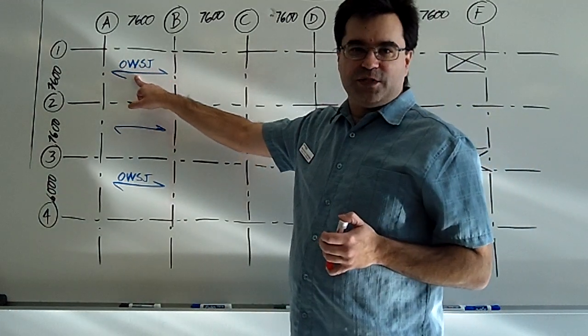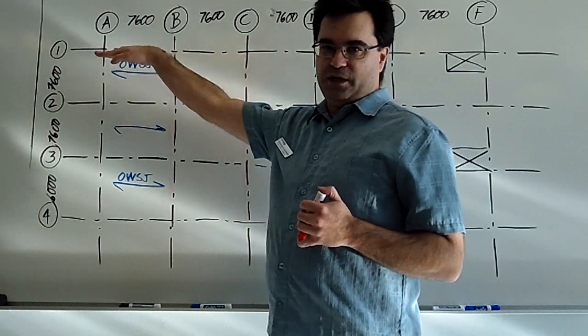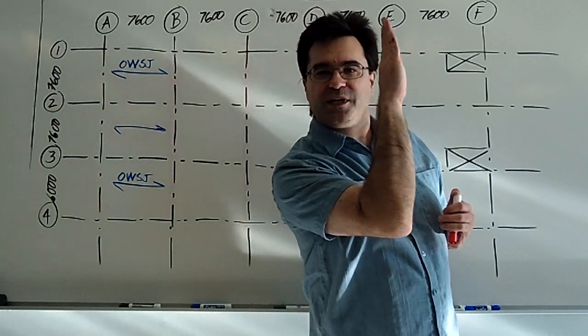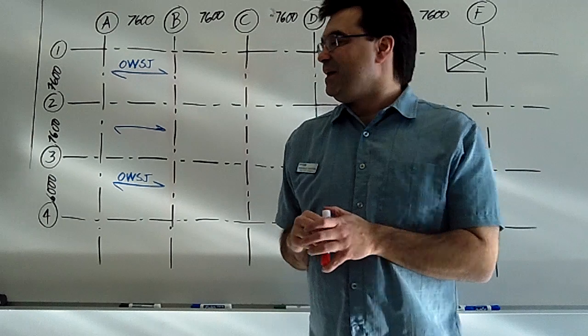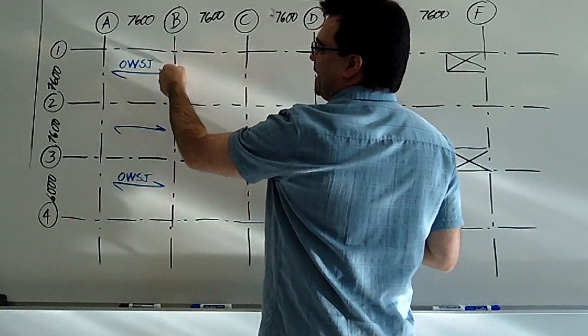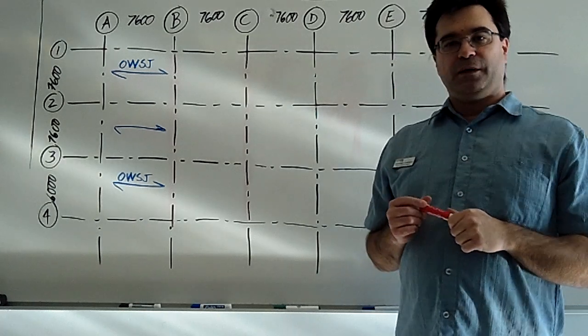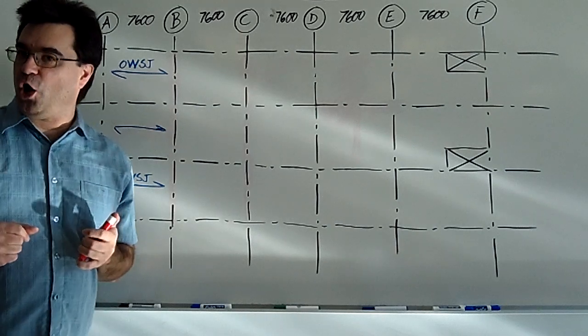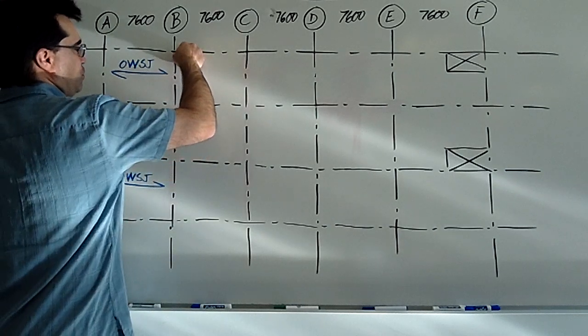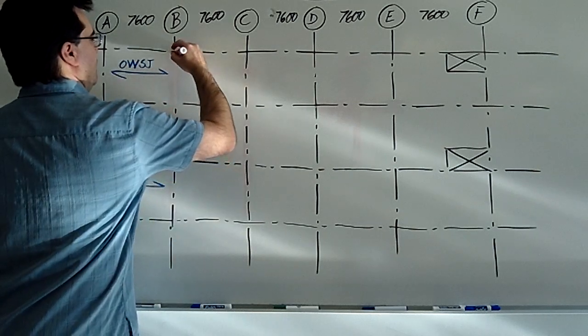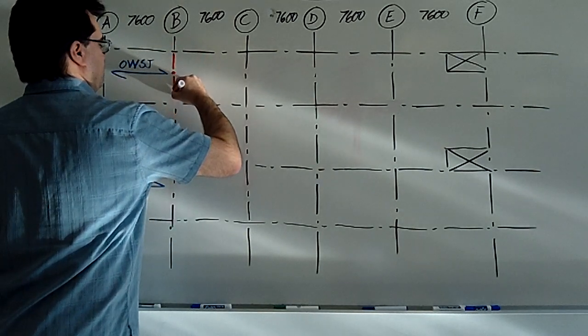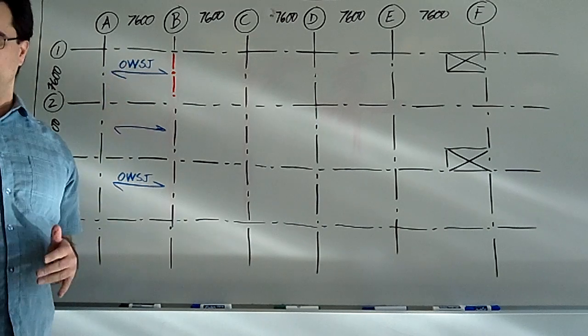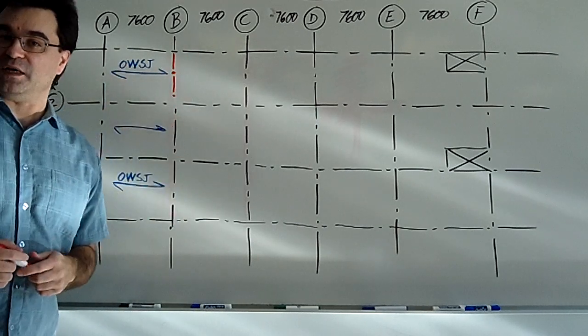Once you know what direction the open web steel joists are going in, in this case, this way, east-west, the girders are perpendicular to that. Makes sense, right? If your open web steel joists are going this way, then they have to be held up by something perpendicular to it. So in our case, our girders, they always go along major grid lines. So our girder would be right here. Now, I'm using a pattern for my lines. Don't take that as the right pattern. I'm just using it to distinguish it, using colors as well, from other lines that I'm drawing.